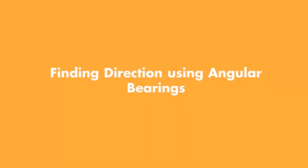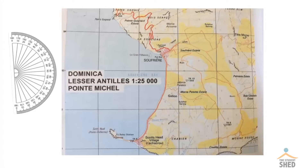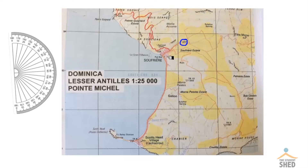Let us now look at a map and find the direction of one place from the next using angular bearings. We'll start by finding the angular bearing of the school, which is located right here, from the police station.